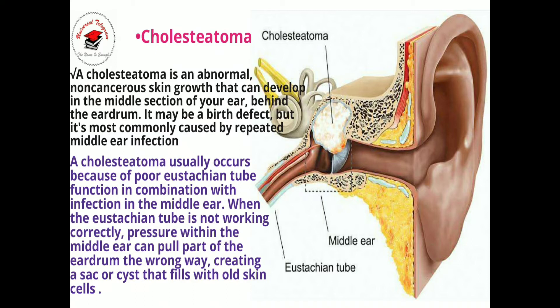A cholesteatoma usually occurs because of poor Eustachian tube function in combination with infection in the middle ear. When the Eustachian tube is not working correctly, pressure within the middle ear can pull part of the eardrum the wrong way, creating a sac or cyst that fills with old skin cells. So these are the causes and risk factors of CSOM.